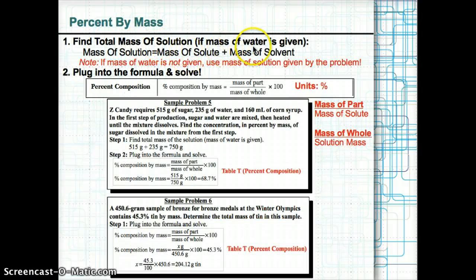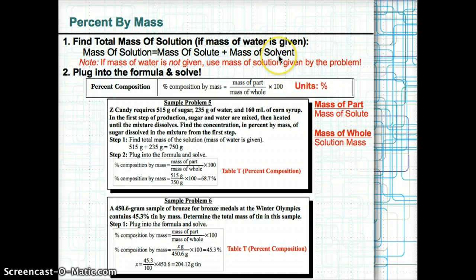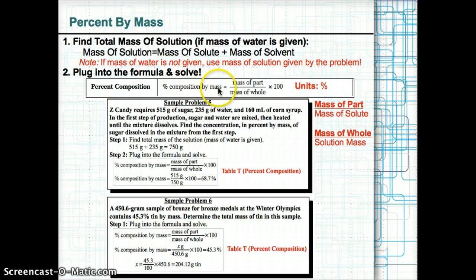The next measure of concentration is percent by mass. To find percent by mass, first find the total mass of solution if the mass of water is given — remember that solution = solute + solvent, so mass of solution = mass of solute + mass of solvent (usually water). If the mass of water isn't given, use the mass of solution the problem provides. Then plug into: percent composition by mass = (mass of solute ÷ mass of solution) × 100%.